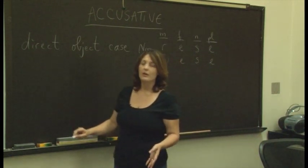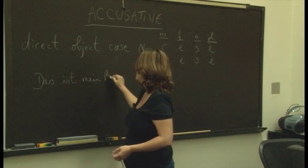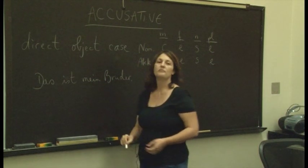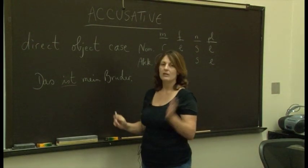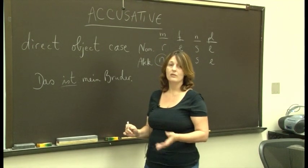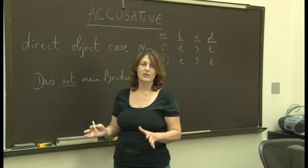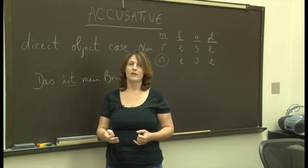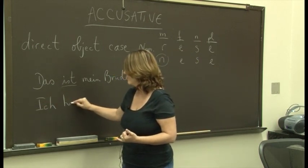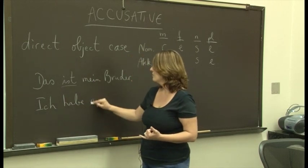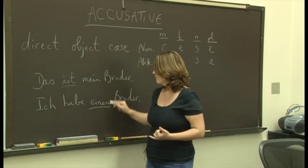So, you don't use it with the verb to be. Das ist mein Bruder. You don't use the accusative, meinen, here because we have the verb to be. Verb to be does not take an object. But you use it with many other verbs. If you remember, we had a list of verbs that take the accusative, and we probably had haben, very first one in the list. Ich habe, well, I have a brother. Ich habe einen Bruder.